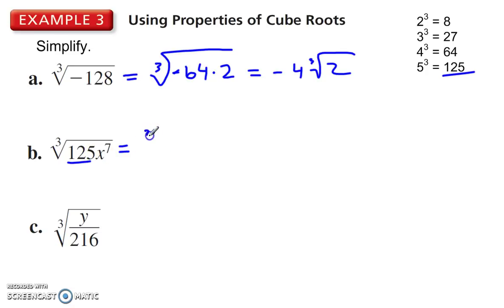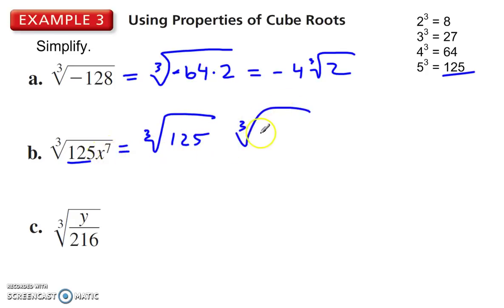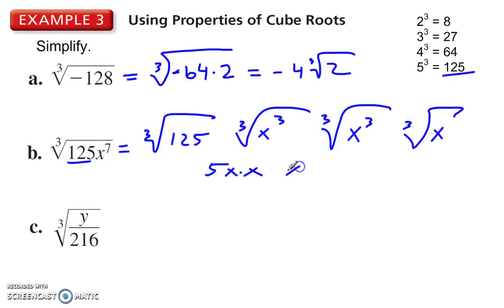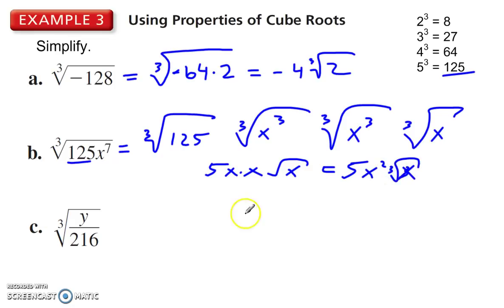Here we know 125 is 5 cubed, so take that out. Split this up into cube root of 125, and then the cube root of x to the third times x to the third times x. Here we have 5, x to the third gives x times x, and then we have an x left under the cube root. So that gives me 5x² times the cube root of x.